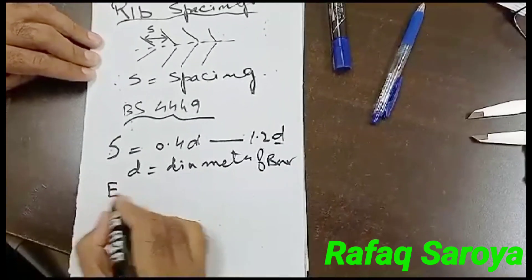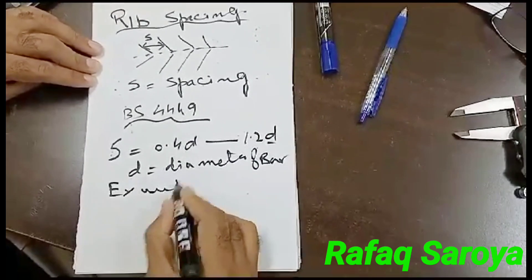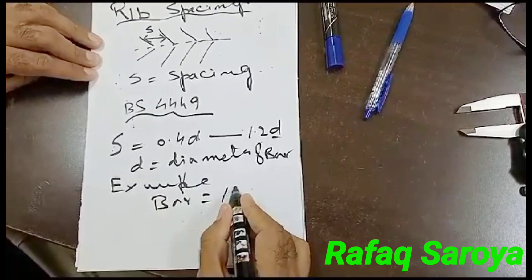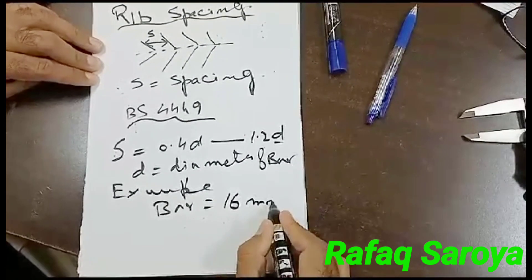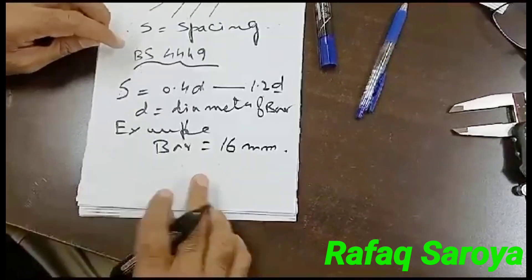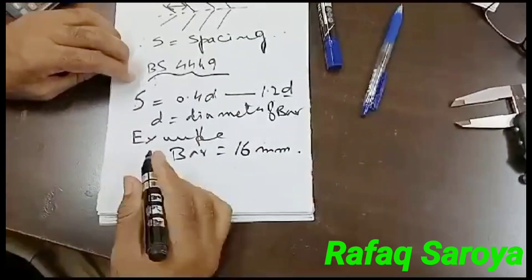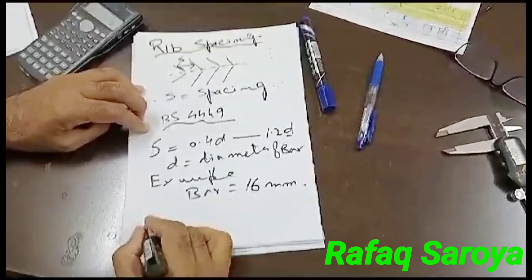For example, I am considering a bar whose diameter is 16mm. When I am considering this bar of 16mm, I will put this value and try to find out the value of the spacing.